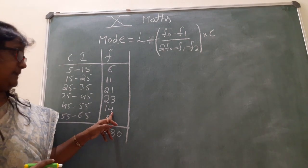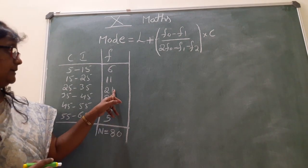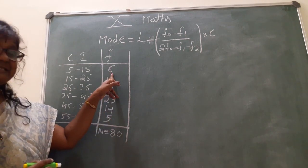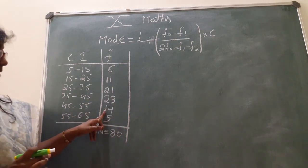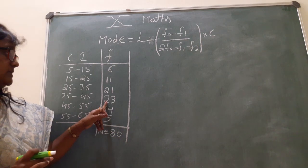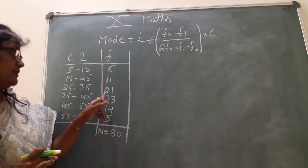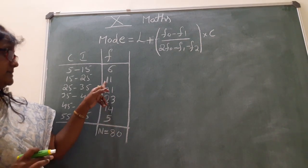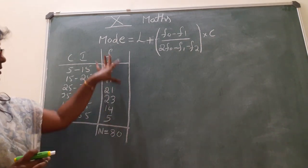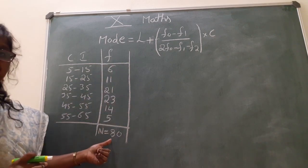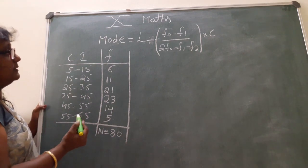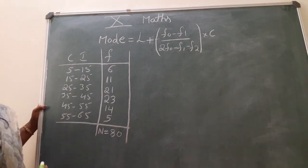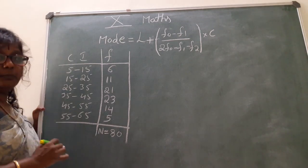Adding all frequencies: 6 plus 11 is 17, plus 21 is 38, plus 23 is 61, plus 14 is 75, plus 5 is 80. So the sum of all the frequencies, capital N, is 80. Then find the values of L, F0, F1, F2, and C. It is very easy in mode.